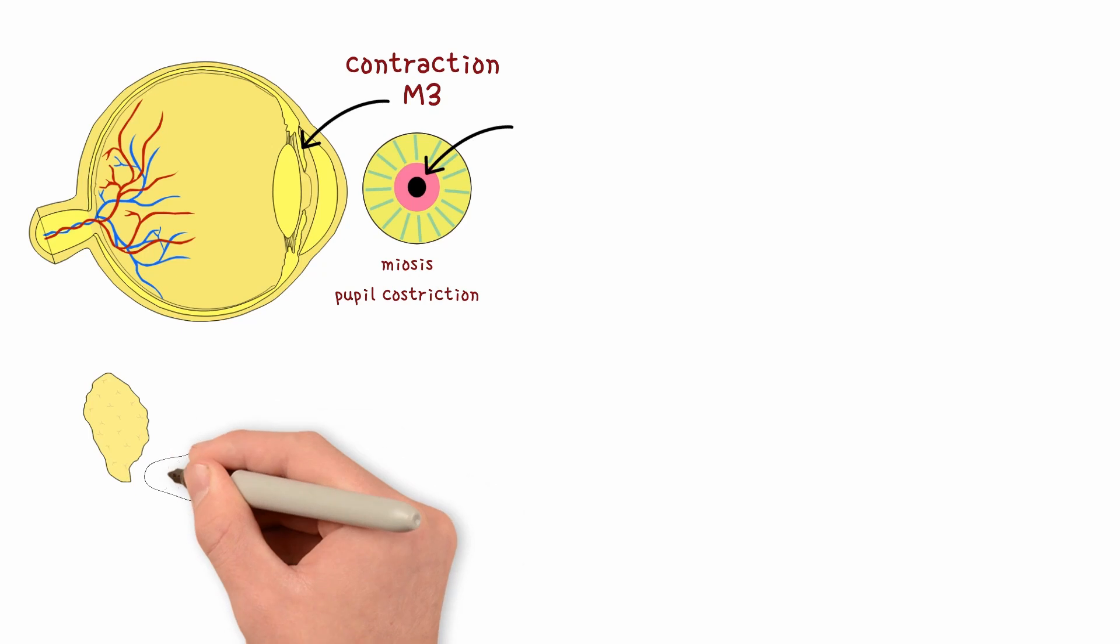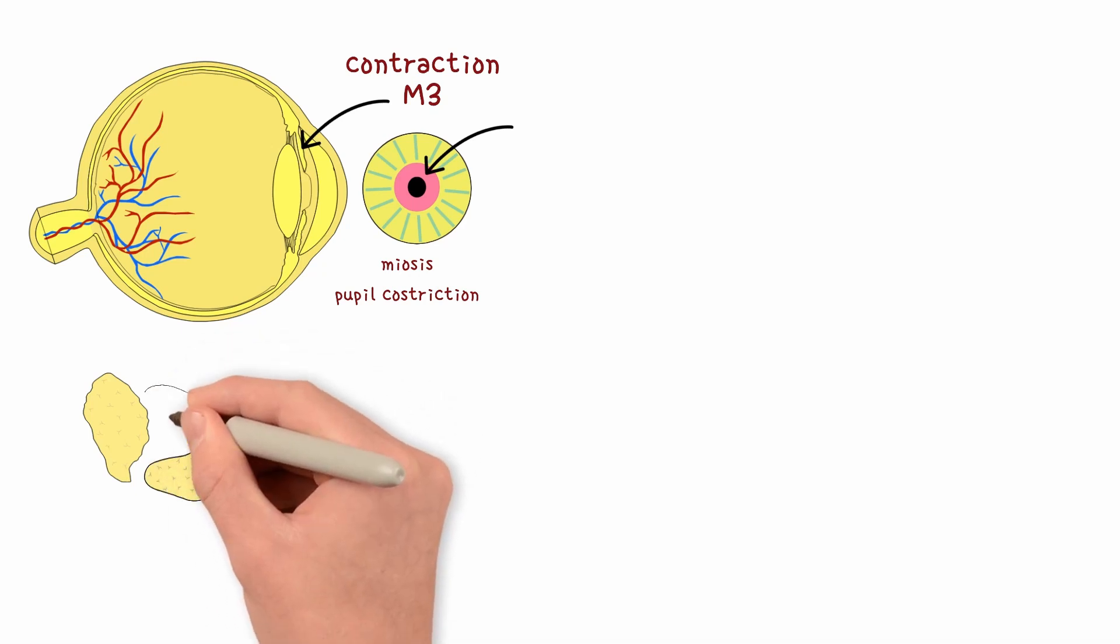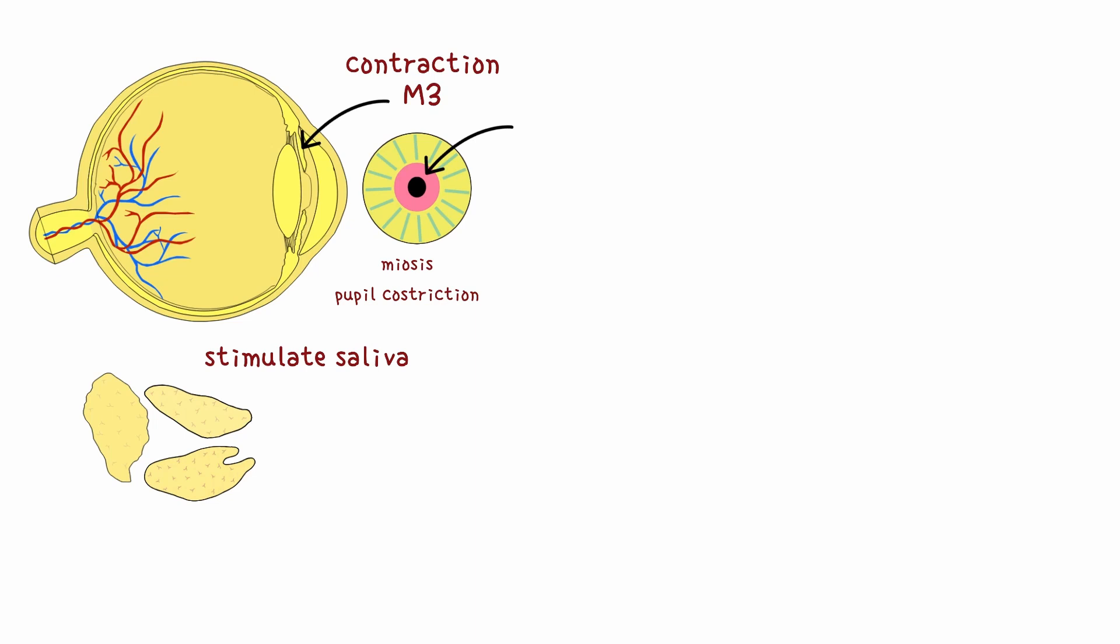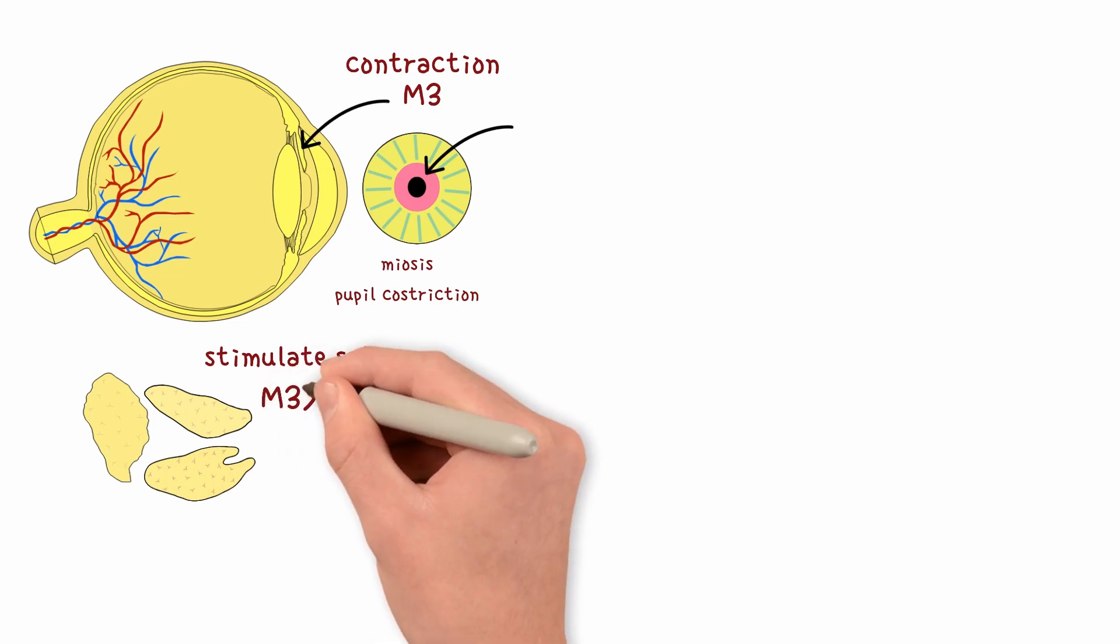Salivary glands. Jack is digesting snacks. Parasympathetic discharge stimulates salivary glands to produce copious, watery secretion. They have both M1 and M3, but M3 is predominant.